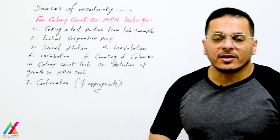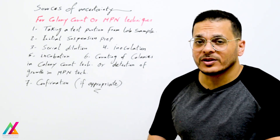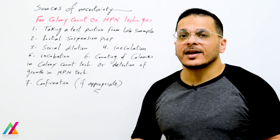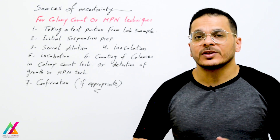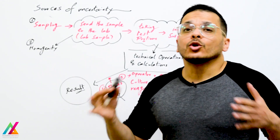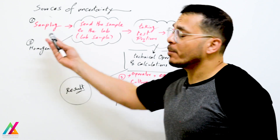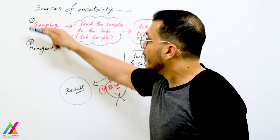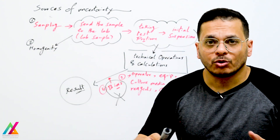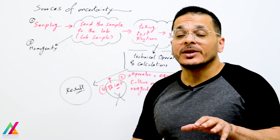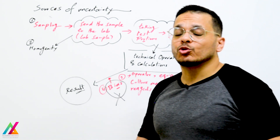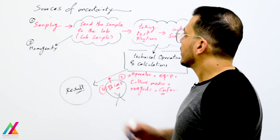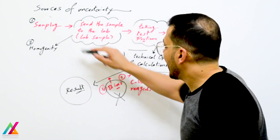Sampling uncertainty is also a source of uncertainty, but it is not included in this standard. I will explain sampling uncertainty at the end of this course. During the whole process, first sampling is performed to collect the required sample and send it to the lab. Sampling can have uncertainty, so sampling uncertainty shall be calculated and added to the combined uncertainty at the end.